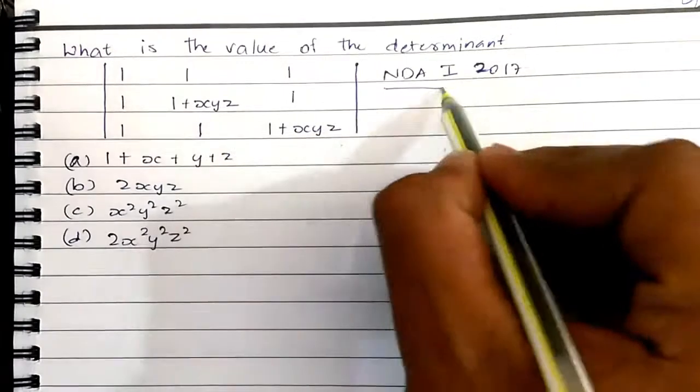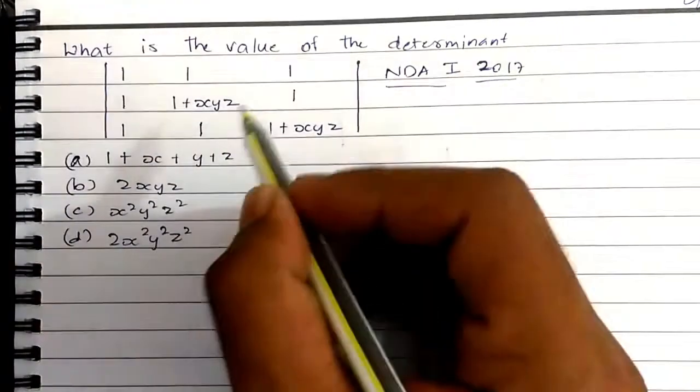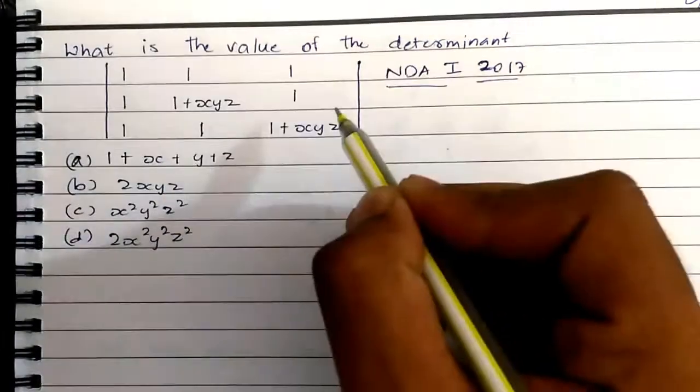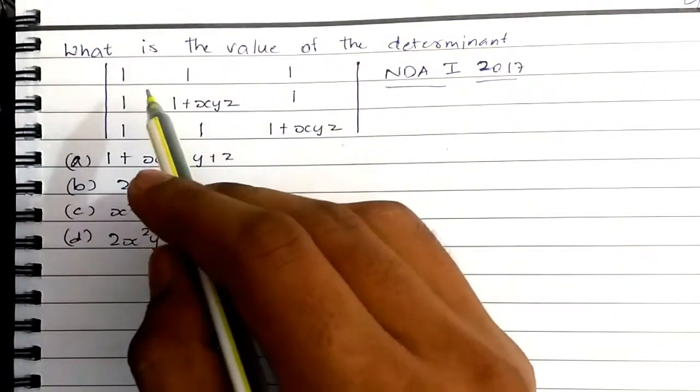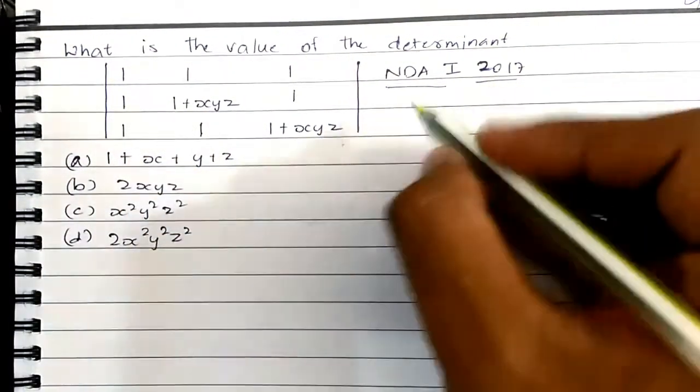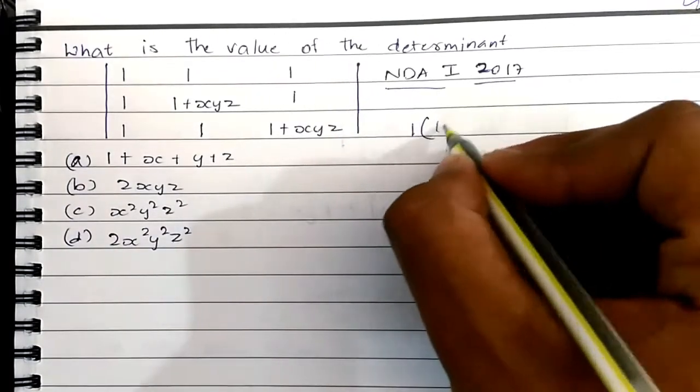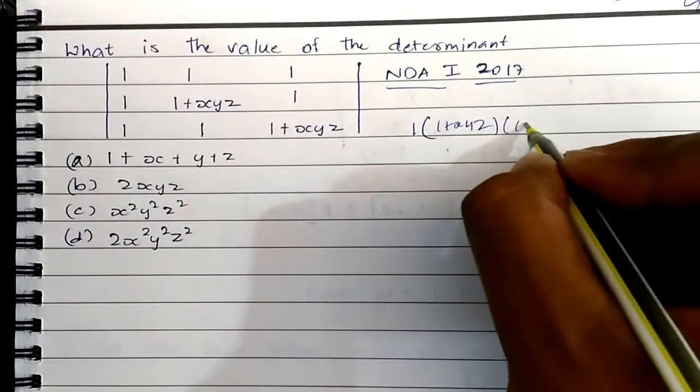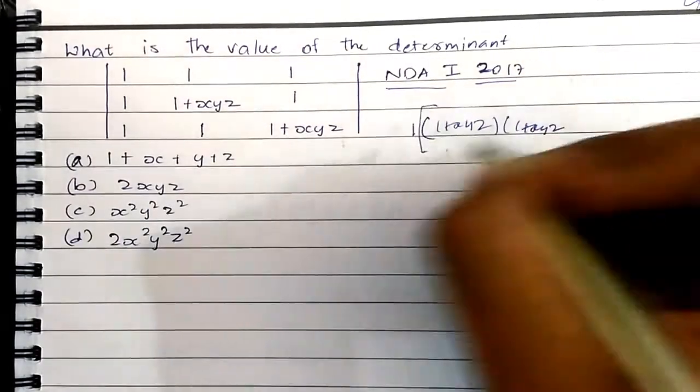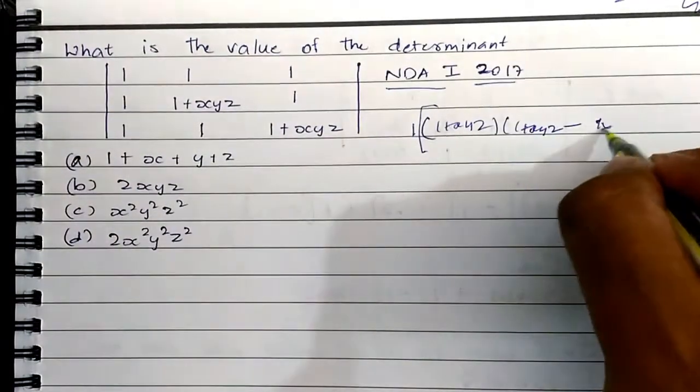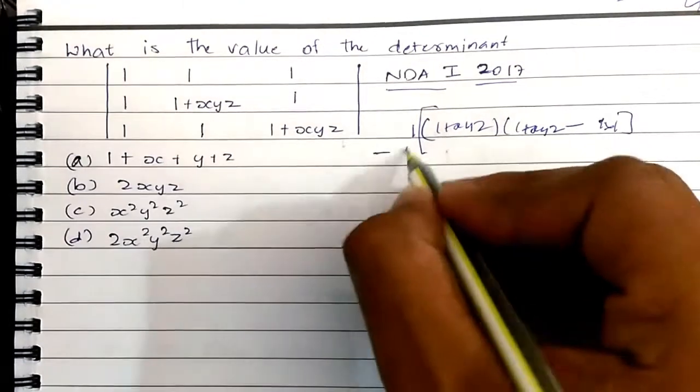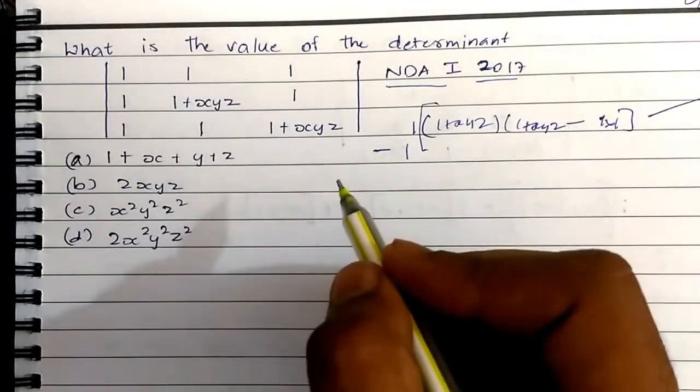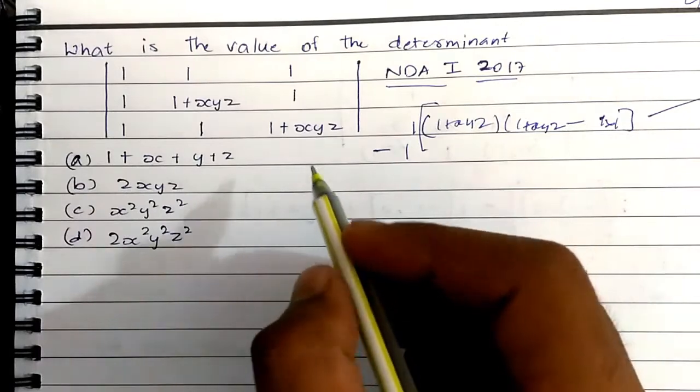This was a question that was asked in the NDA1 paper of 2017, so I'm going to tell you a trick to solve this question. By normal method, if you would have meant to solve this question, then you will multiply 1 into 1+xyz into 1+xyz, minus again 1 into 1, after that again minus 1. You will do all that thing, but we can do it directly.